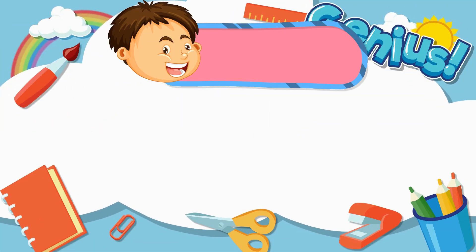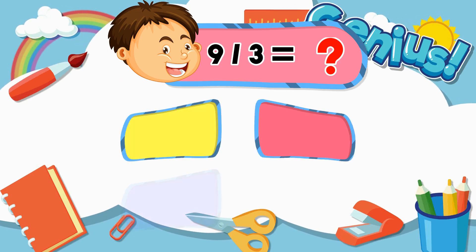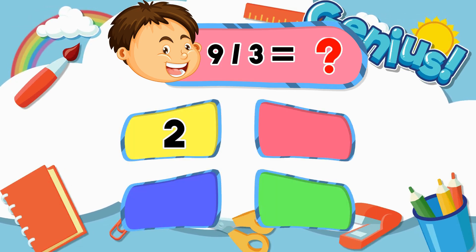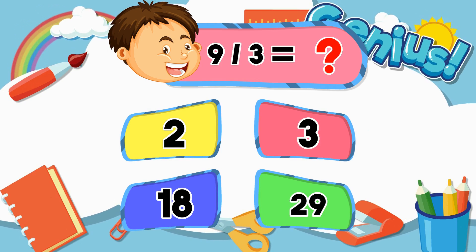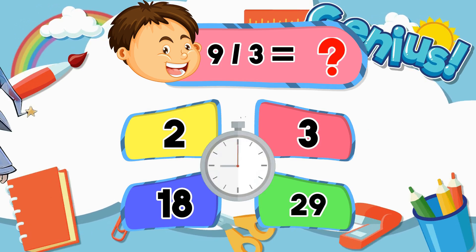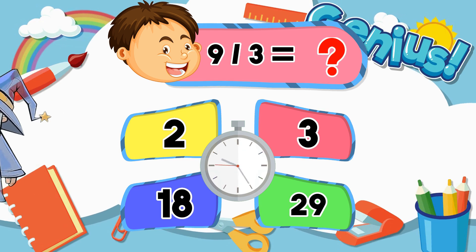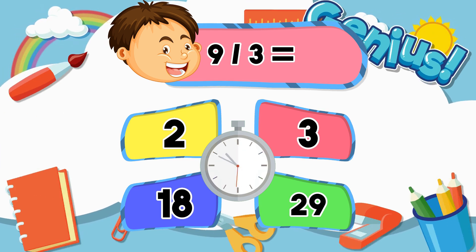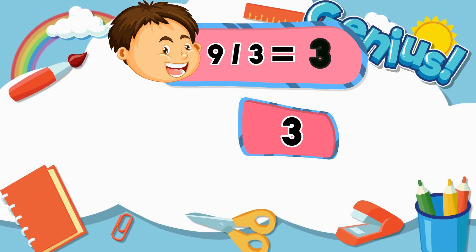What is nine divided by three? Two. Three. Eighteen. Twenty-nine. Three.